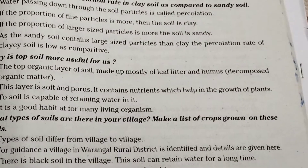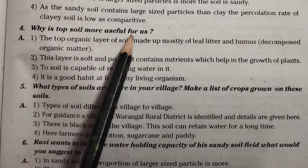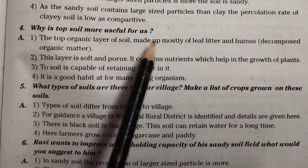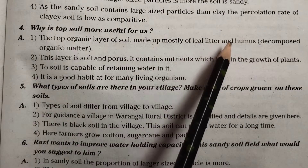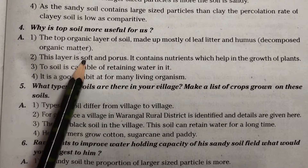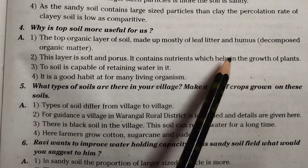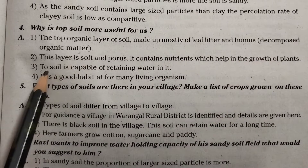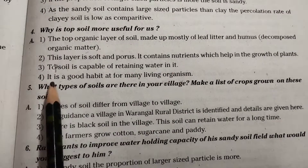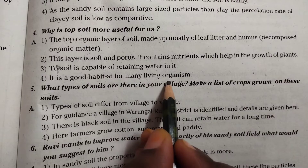Fourth one: Why is topsoil more useful for us? Answer: The top organic layer of soil is made up mostly of leaf litter and humus, which is decomposed organic matter. This layer is soft and porous. It contains nutrients which help in the growth of plants. Topsoil is capable of retaining water. It is a good habitat for many living organisms.